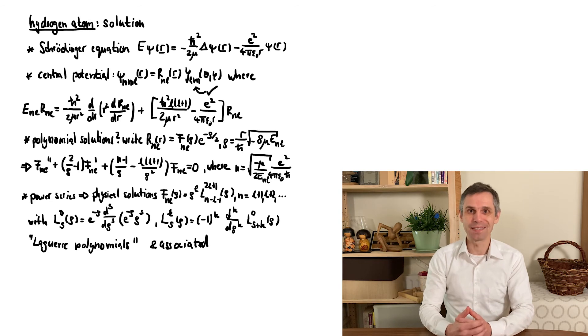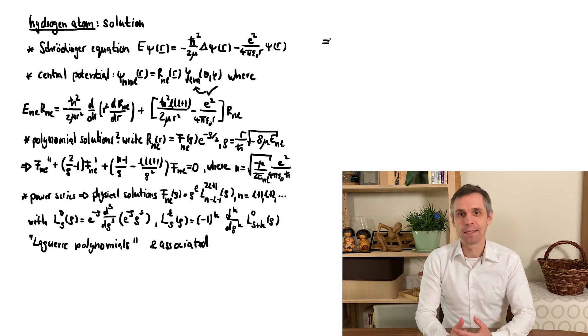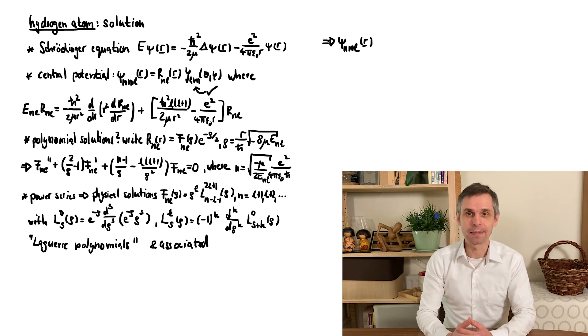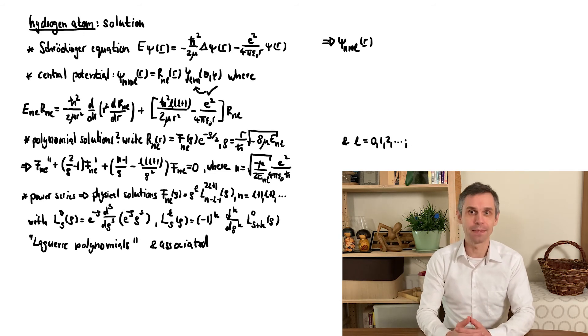And we can collect our results. The wave functions are indexed by three quantum numbers, with n known as the principal quantum number.